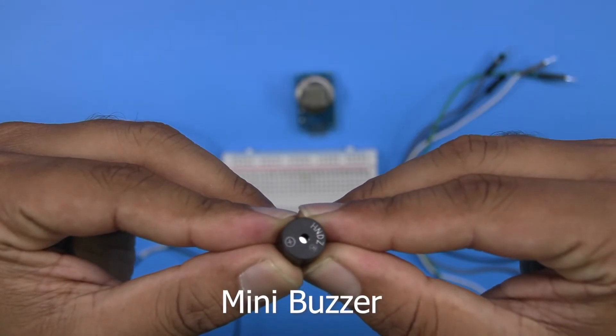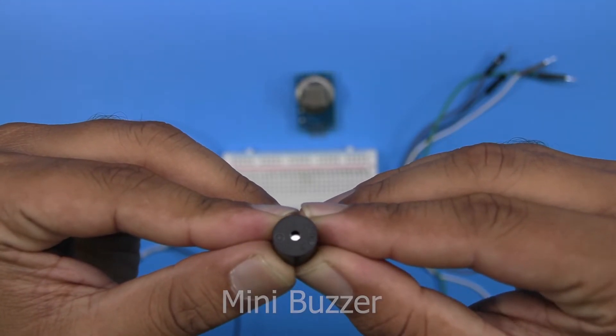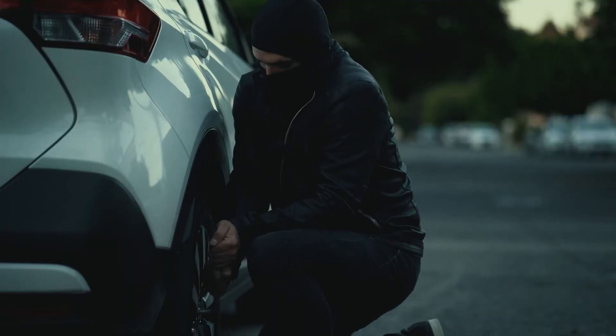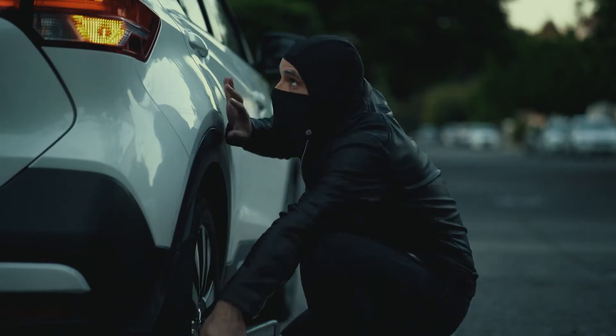Next up we have a mini buzzer. This gives us a signal in form of sound when it senses any gas leak or unwanted smoke.